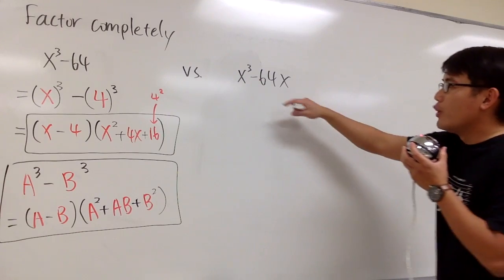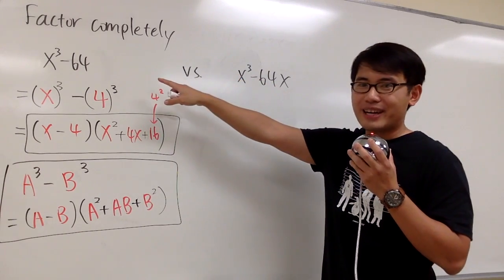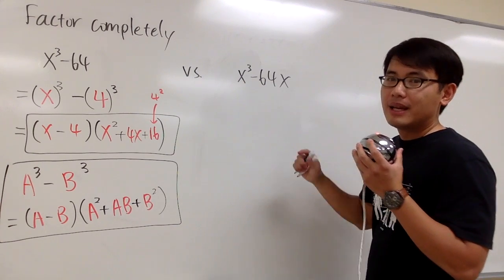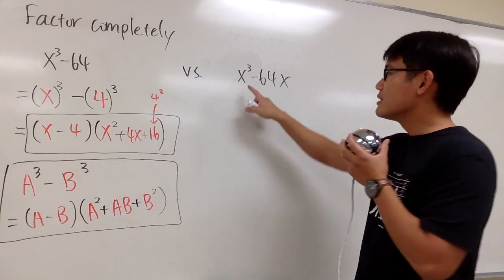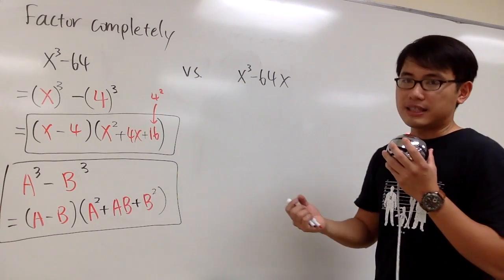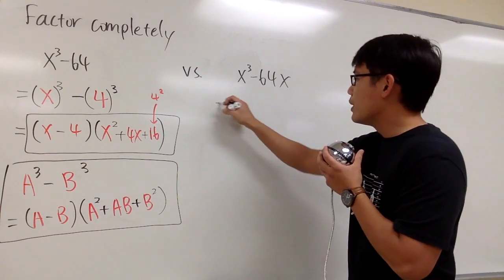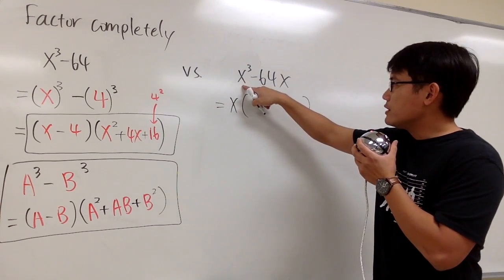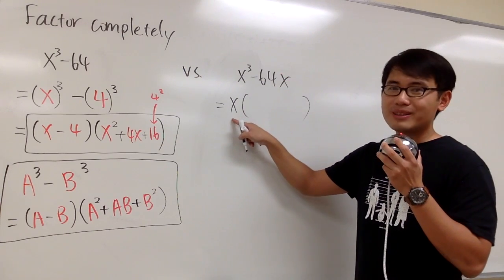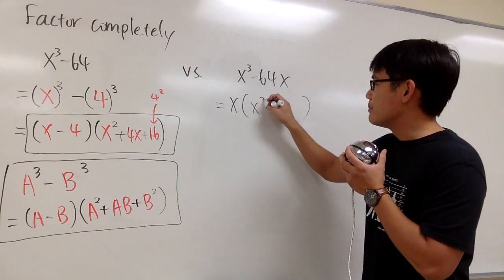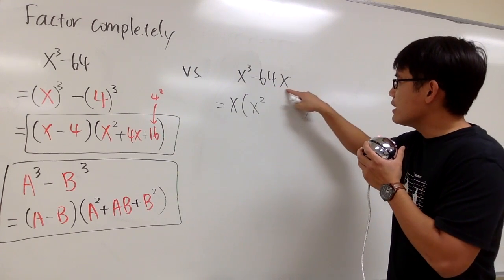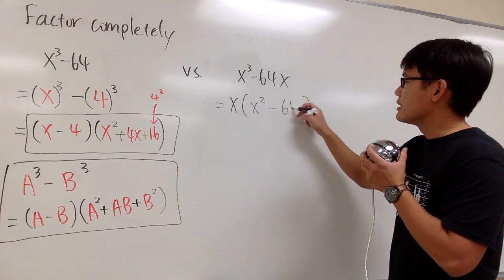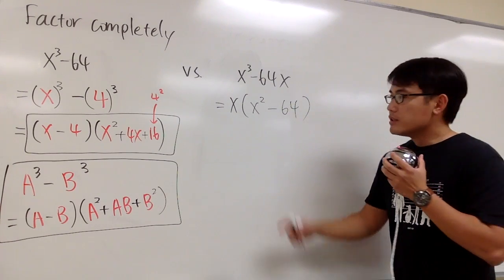Now let's look at the second example. We have something very similar: x to the third power minus 64x. But in this case, it's different because first we can factor out an x. That means we have x on the outside, and inside the parentheses: originally the first term was x to the third power, but we took one x out, so we have x squared. And the second term was minus 64x, but after factoring out x, we just have minus 64.